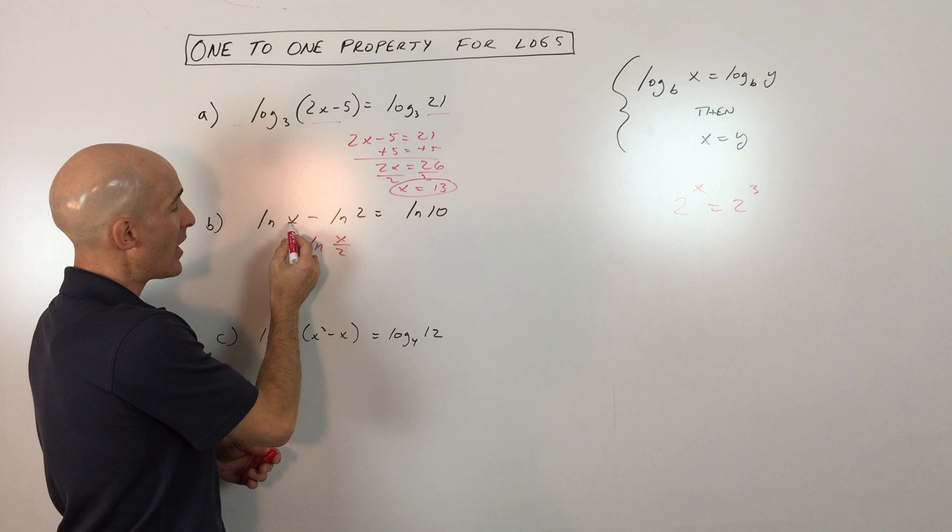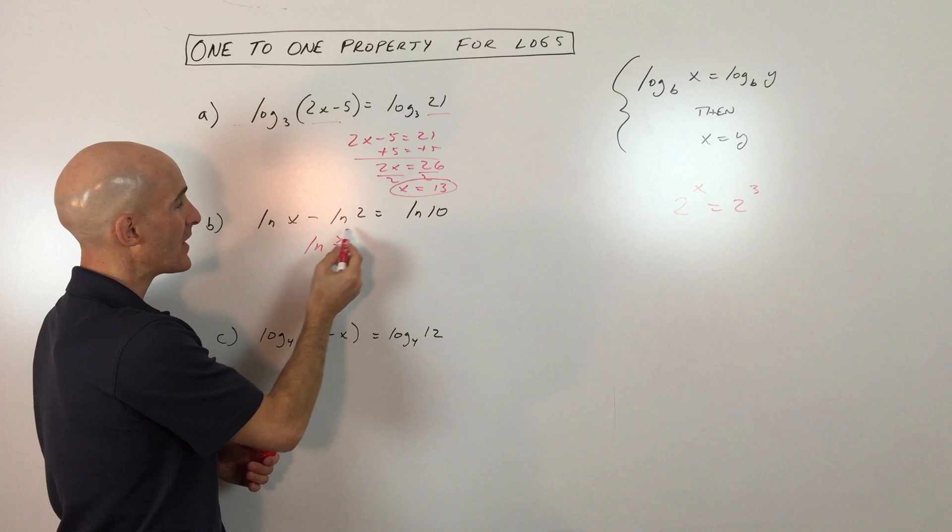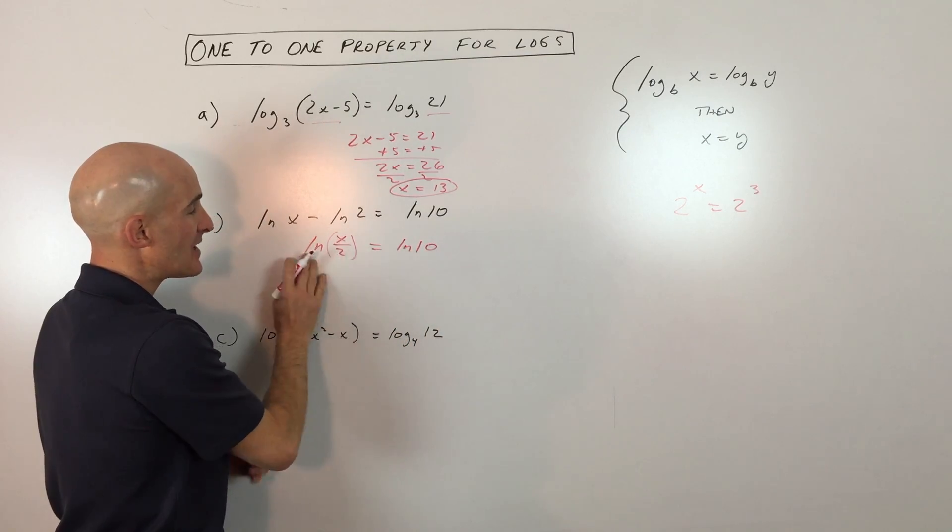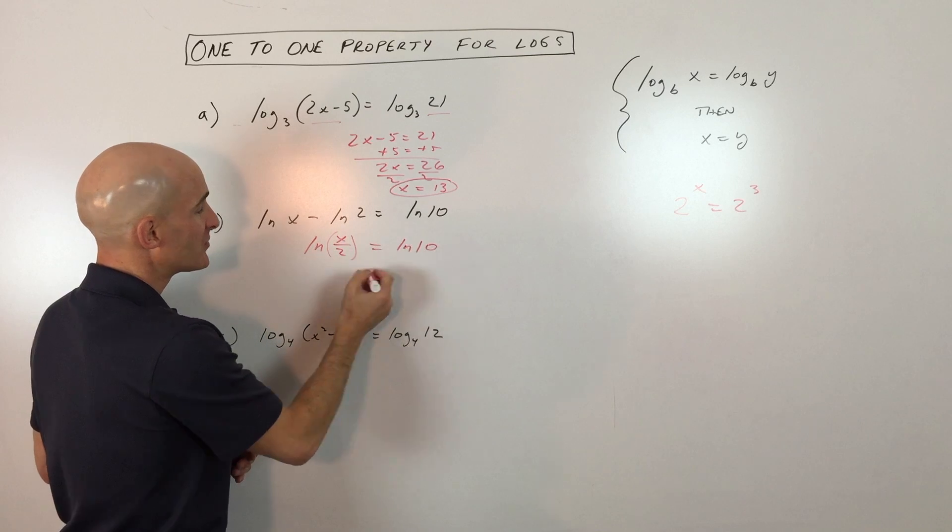It's the log of x minus the log of 2, natural log of x minus natural log of 2. You take this quantity divided by this quantity, so natural log of x divided by 2 equals the natural log of 10. And you can see now we have the same base. Natural log is log base e, so that means that this argument is equal to this argument.